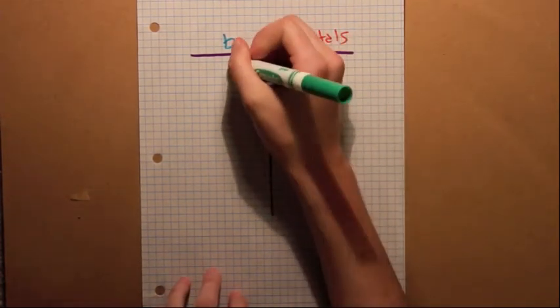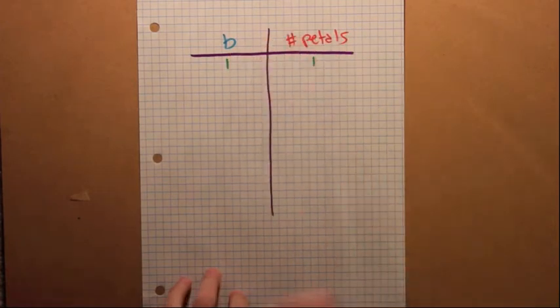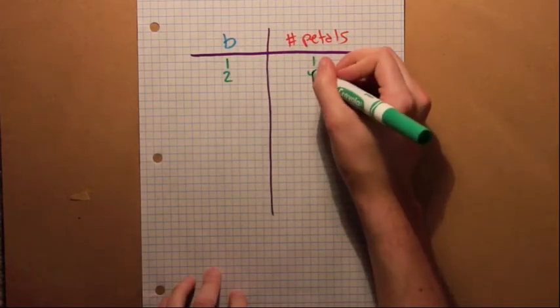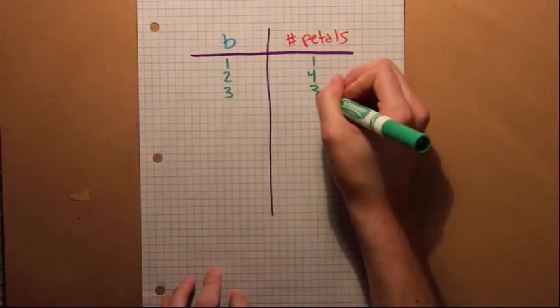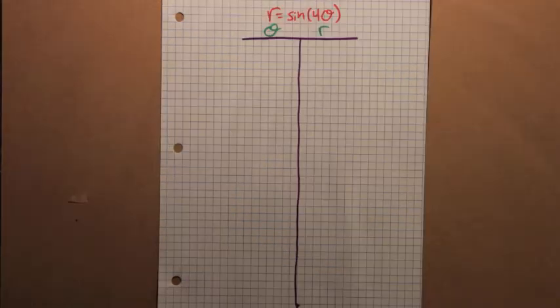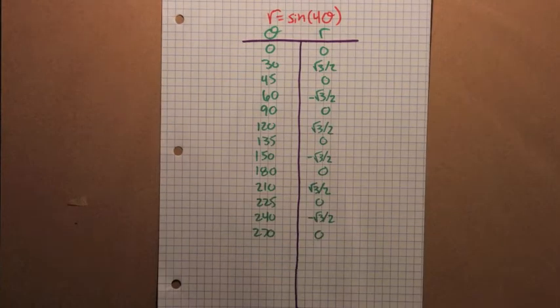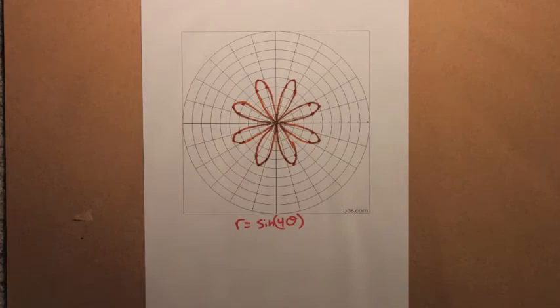We know when b equals 1, there is only one petal. When b is 2, there are 4, and when b is 3, there are 3 petals. So let's try r equals sine 4 theta. We make a table, plot the points, and get a flower with 8 petals.